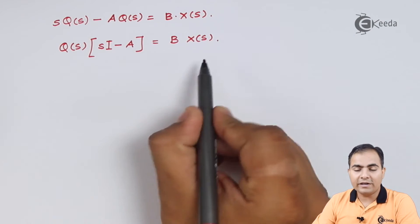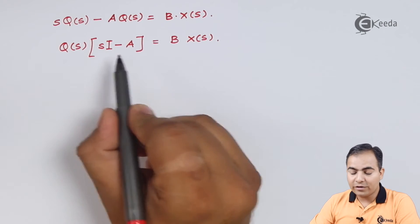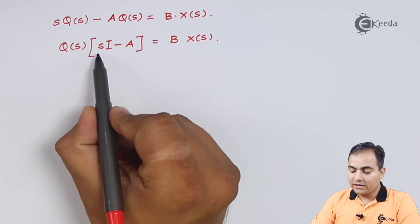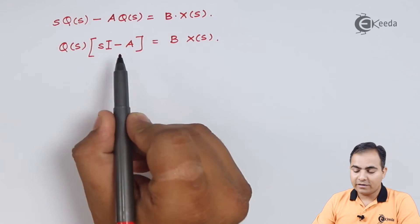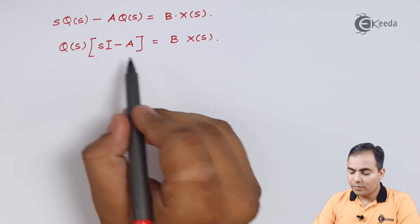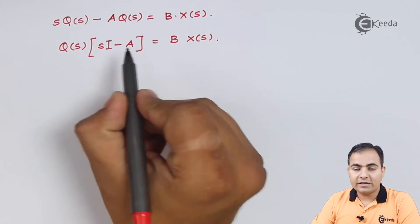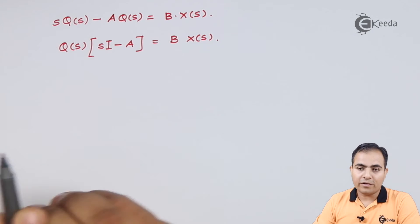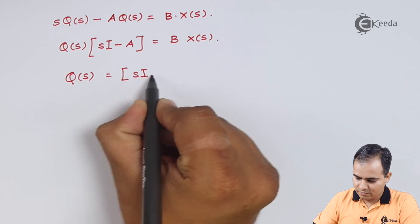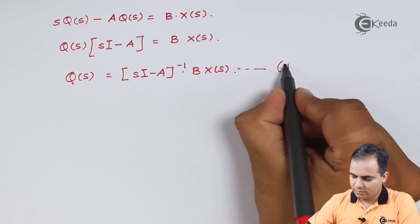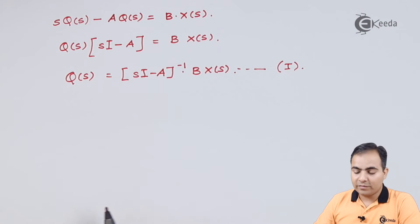We will shift this sI minus A on right hand side. So this whole term will be in denominator. But I want to write this whole term in numerator. So what I am going to do I will place a minus 1 power. I will shift the sI minus A whole bracket on right hand side. So this whole bracket will be in denominator. But if I want to write it in numerator so I will just mark inverse on outside this bracket or on top corner. Let's say this is my equation number 1.